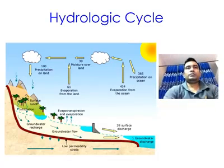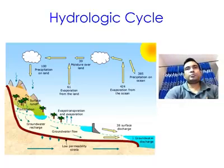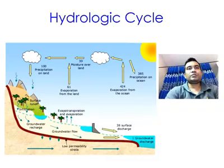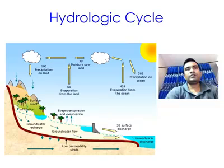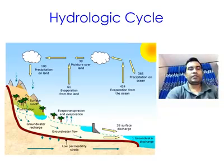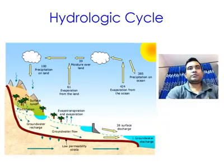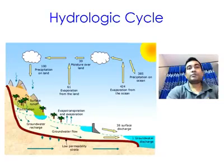The global system that supplies and removes water from our surface is known as the hydrologic cycle. Water is transferred to the earth's atmosphere through two processes: evaporation and transpiration.